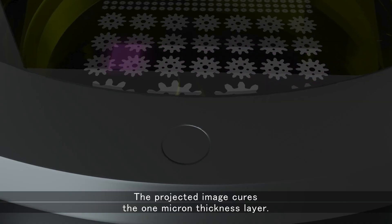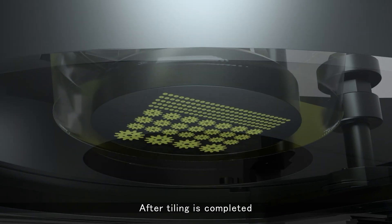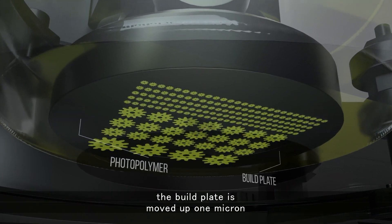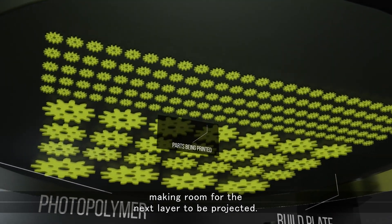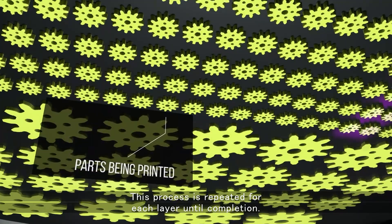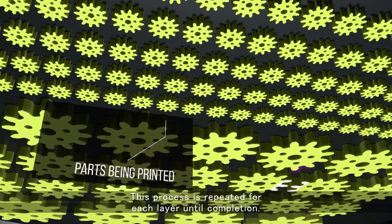The projected image cures the one micron thickness layer. After tiling is completed, the build plate is moved up one micron, making room for the next layer to be projected. This process is repeated for each layer until completion.